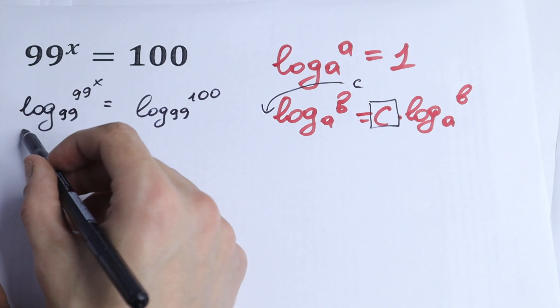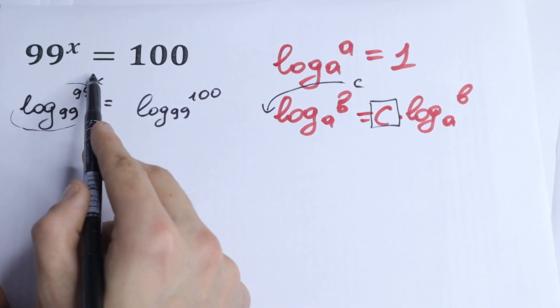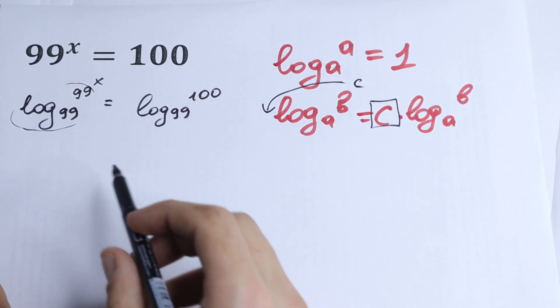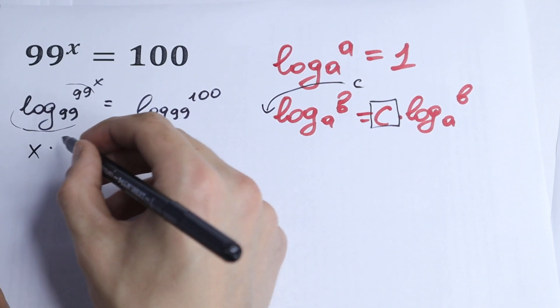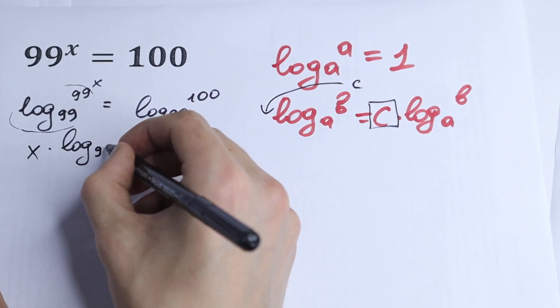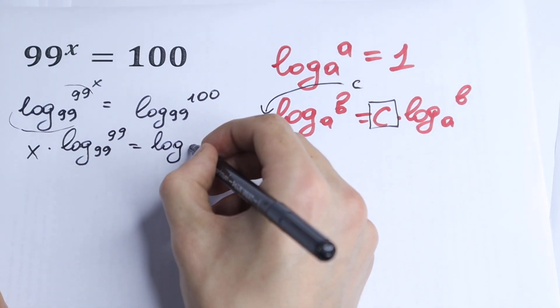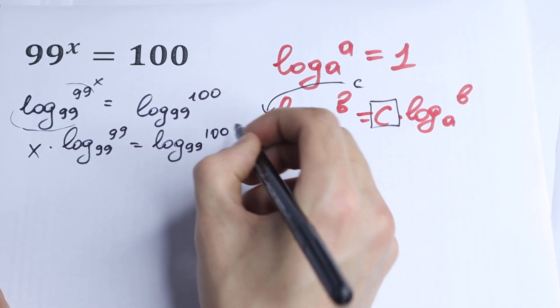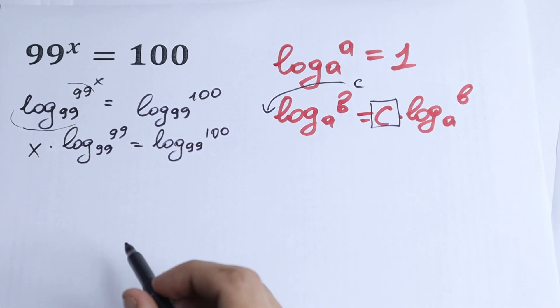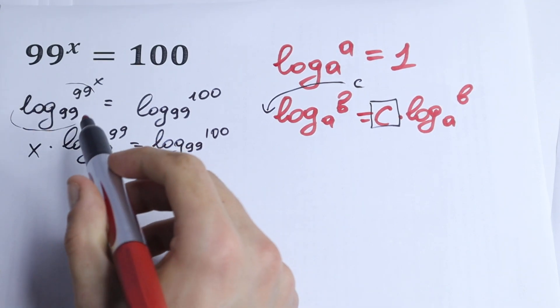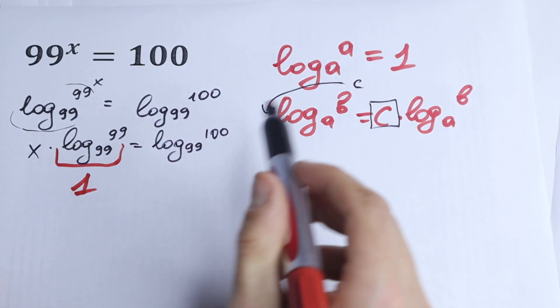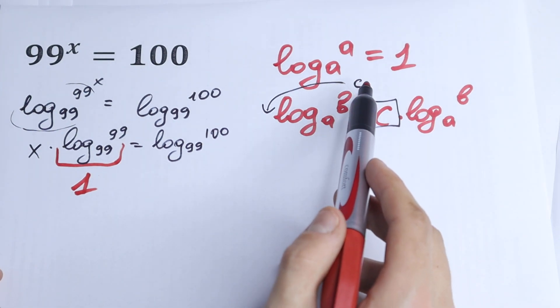It's not hard to see that this would be equal to 1, and this jumps right here. So let's use this rule and write it: x times log base 99 of 99 equals log base 99 of 100. So this will be equal to 1 for sure because we know the rule.